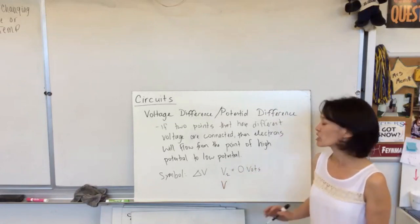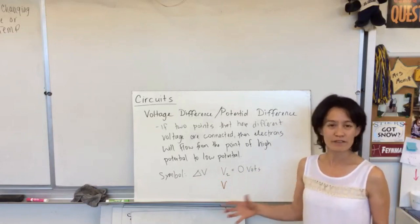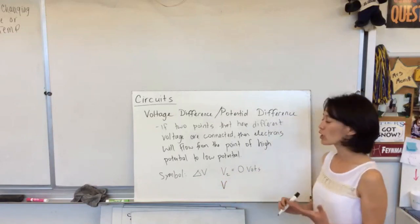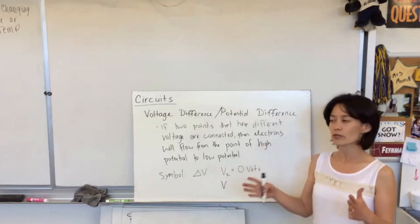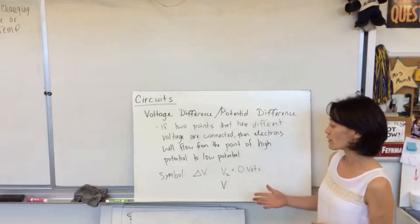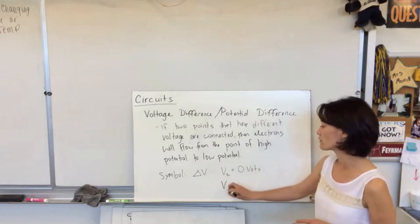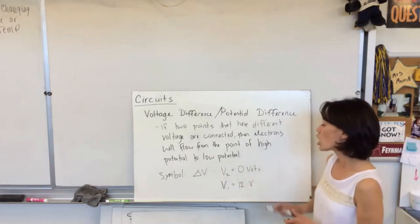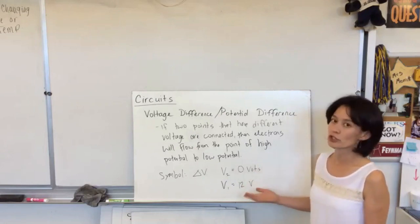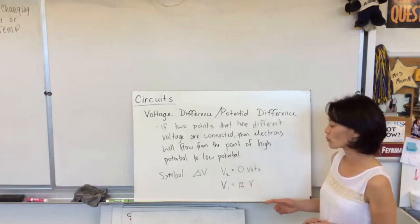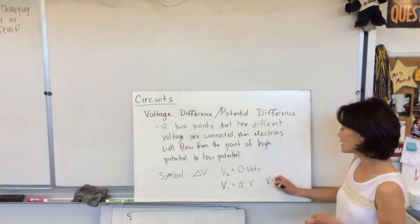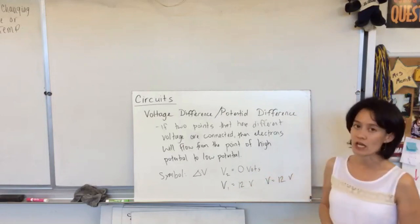So we're not necessarily going to write out delta V. It is a difference in voltage, but we don't necessarily care what those absolute points are, we just care that there is a difference between them of a certain value. So like if V1 is 12 volts, our potential difference is just 12 volts, so normally we'll just call it V is 12. That's the potential difference of our system.